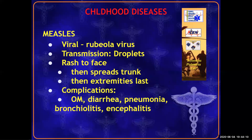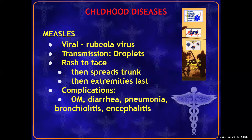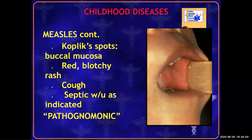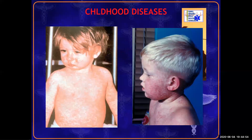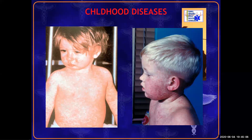Measles is a high-frequency test item — expect a measles versus chickenpox question. Here are three easy ways to tell them apart. First: where did the rash start? Measles starts on the face; chickenpox starts on the trunk. Second: does the rash overlap? Measles rash overlaps and runs together; chickenpox lesions are all separate. Third: do the lesions look the same? Measles lesions all look the same; chickenpox lesions are in various stages.